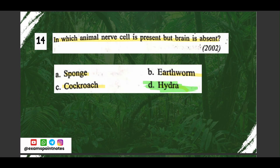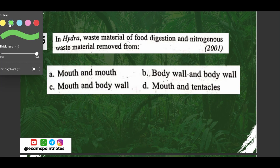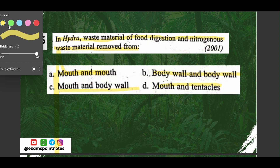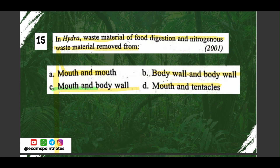Question number fifteen: in Hydra, waste material from food digestion and nitrogenous waste are removed from — A) mouth, B) body wall, C) mouth and body wall, D) mouth and tentacles. The correct option is option C, mouth and body wall.